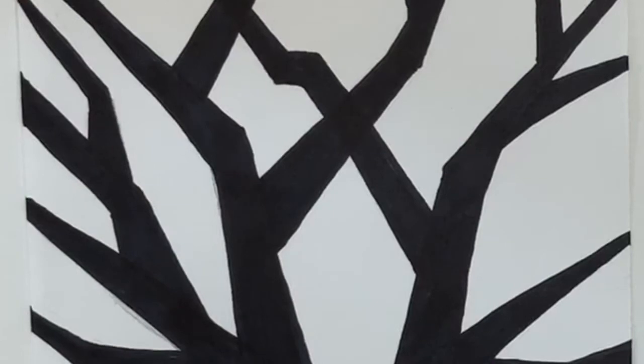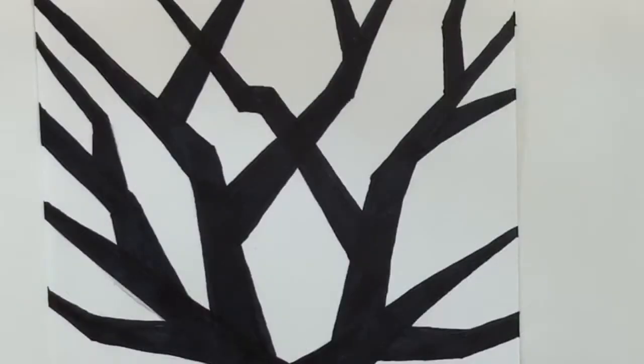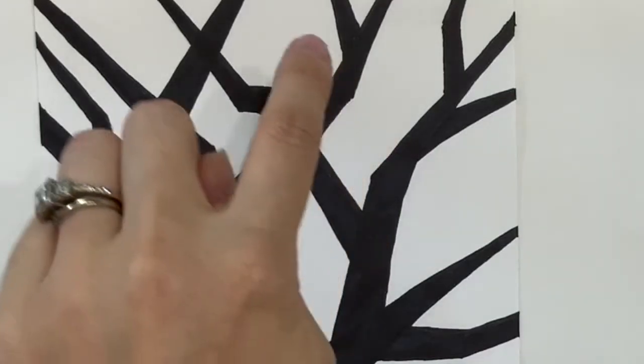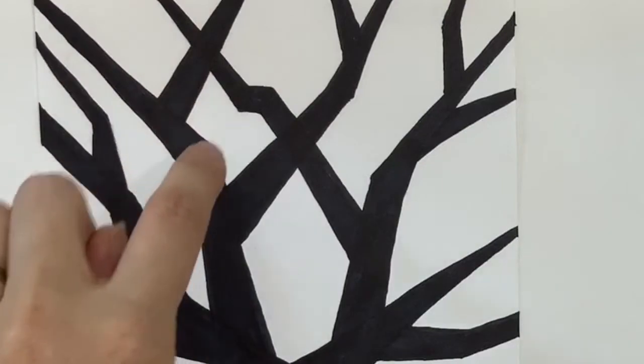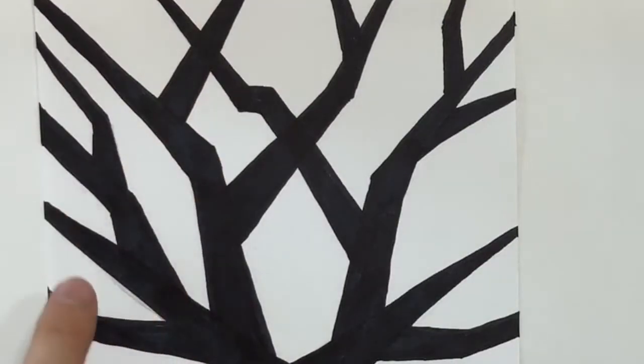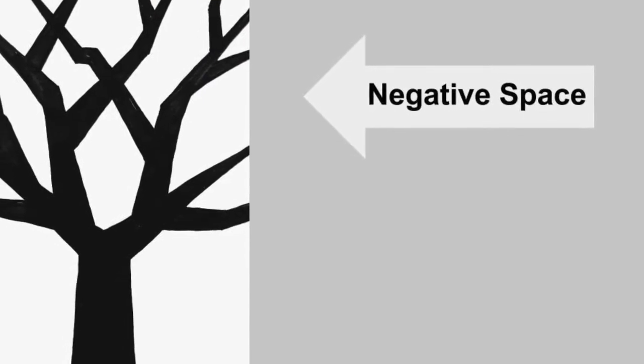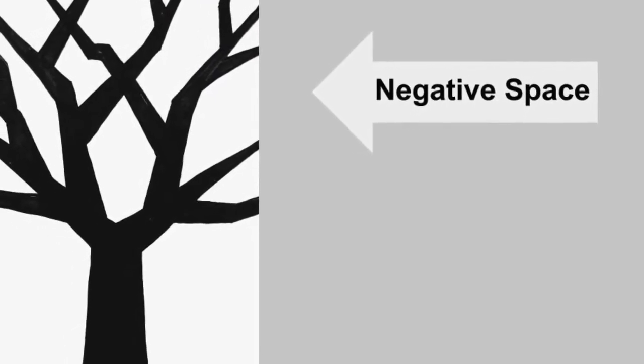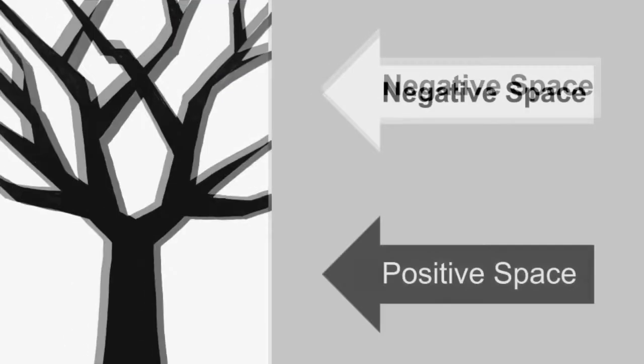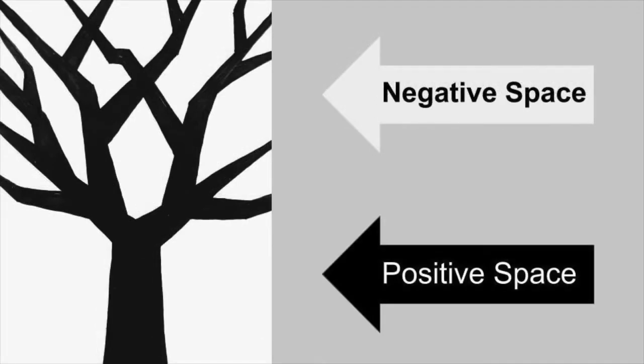When we color today we're going to focus on the white area which is the background. This is also called the negative space. Remember, negative space is the area in or around an object but not the actual object itself. In this work of art the negative space is represented by the white while the positive space is represented by the black.